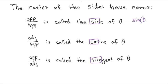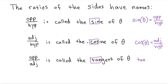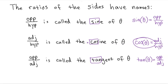So we write sine of theta — with theta in parentheses — as equal to the ratio of opposite over hypotenuse. Cosine of theta is equal to the adjacent side over the hypotenuse. And the tangent, which we write T-A-N, tan of theta is equal to opposite over adjacent. So we're going to identify these three ratios, but instead of saying opposite over hypotenuse, we'll say sine of theta; instead of adjacent over hypotenuse, cosine of theta; and instead of opposite over adjacent, tangent of theta.